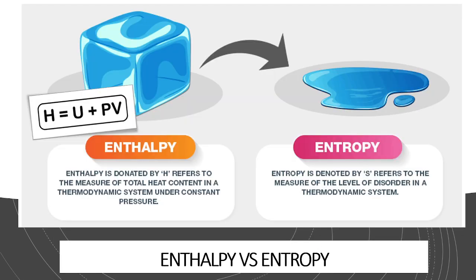What is enthalpy? Enthalpy means the total energy contained in a system or substance. This includes internal energy used for internal molecule movement and kinetic energy, plus the work done — the substance has some capability to do work, which we call pressure times volume, or PV. Collectively, internal energy plus work done is called enthalpy.